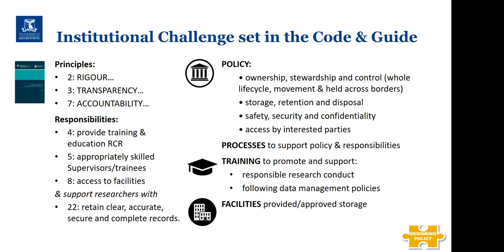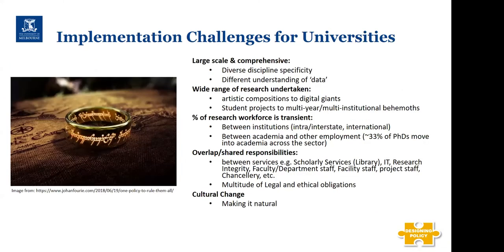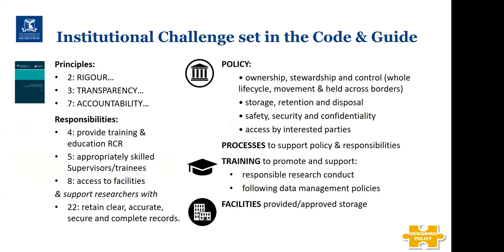There's responsibility five: ensuring supervisors of research trainees have appropriate skills, qualifications and resources. Responsibility eight: institutions must provide access to facilities for safe and secure storage and management of research data, records and primary materials, and where possible allow access to others. We also need to support researchers with their responsibility 22: retaining clear, accurate, secure and complete records of all research, including research data and primary materials. The policy setting challenge — the guidelines — requires us to cover ownership, stewardship and control; storage retention and disposal; safety, security and confidentiality; and access by interested parties.